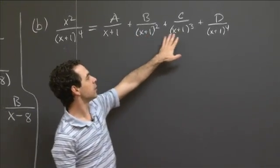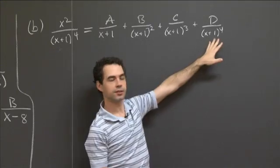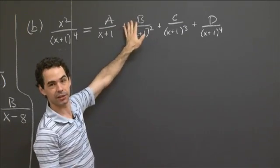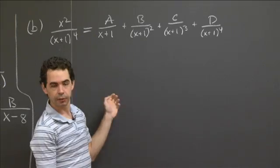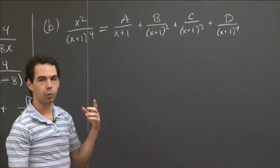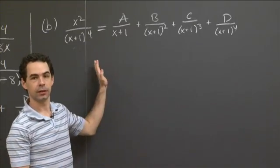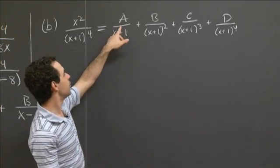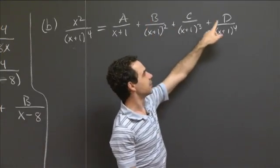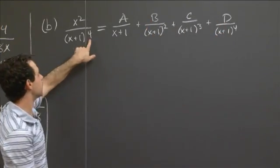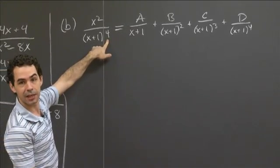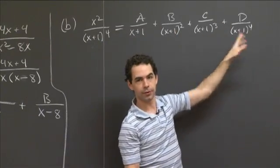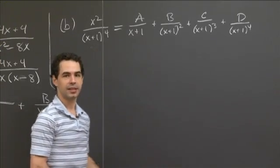Remember, even though the degree of the denominator goes up in these later summands, what stays on top remains a constant. If this were a quadratic factor, it would stay linear on top. A good way to check that you've got the right abstract decomposition before solving for the constants is to count the number of constants you're looking for — it should always match the degree of the denominator. In this case, the degree of the denominator is four and there are four constants, so we're set up correctly.